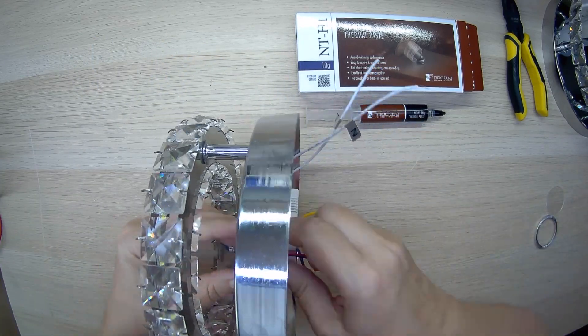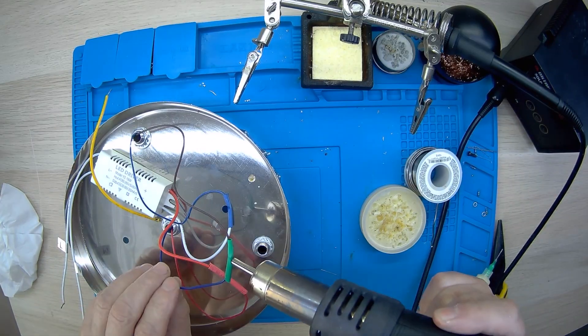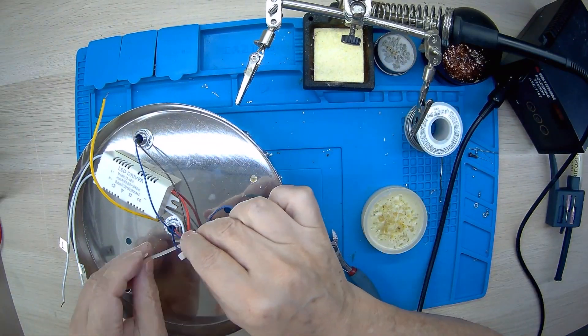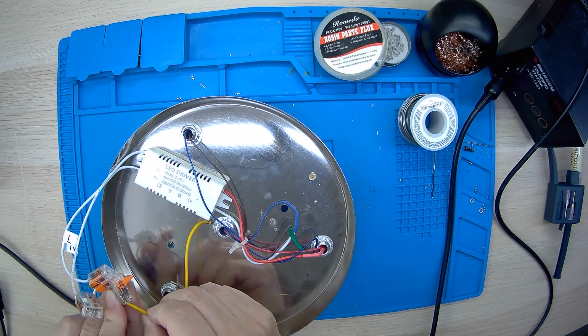All we have to do now is to reassemble the LED fixture by replacing the round board with a small LED section, and all three light fixtures are fully operational and can be installed back in place.